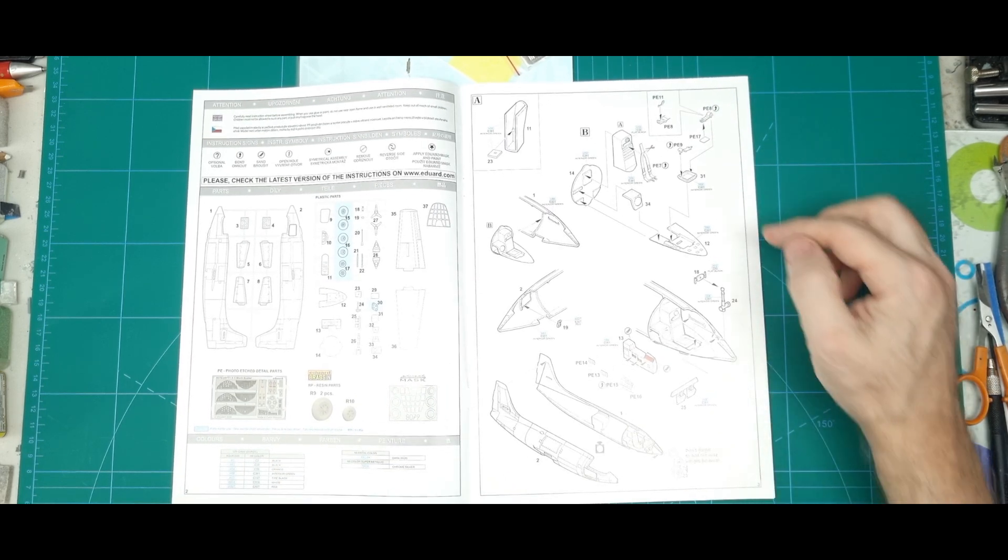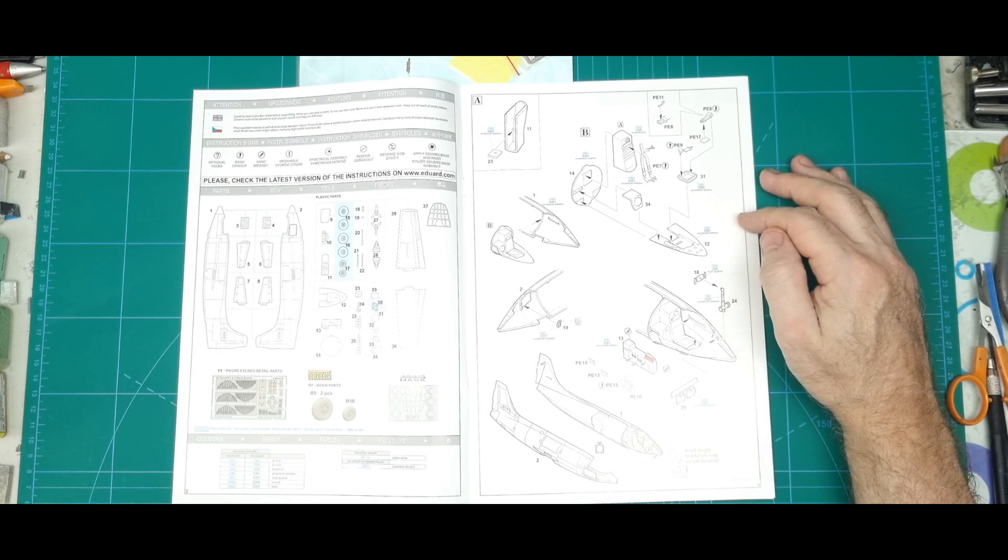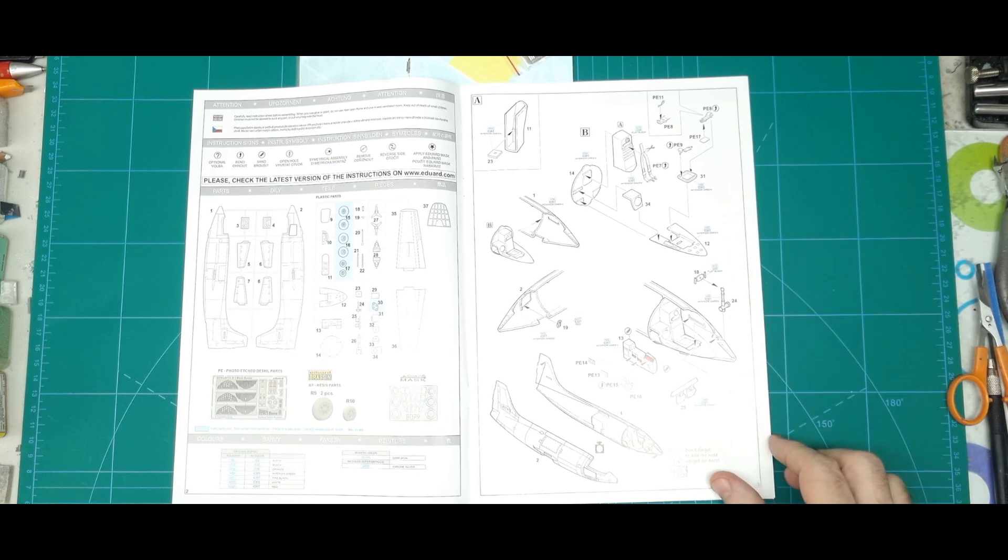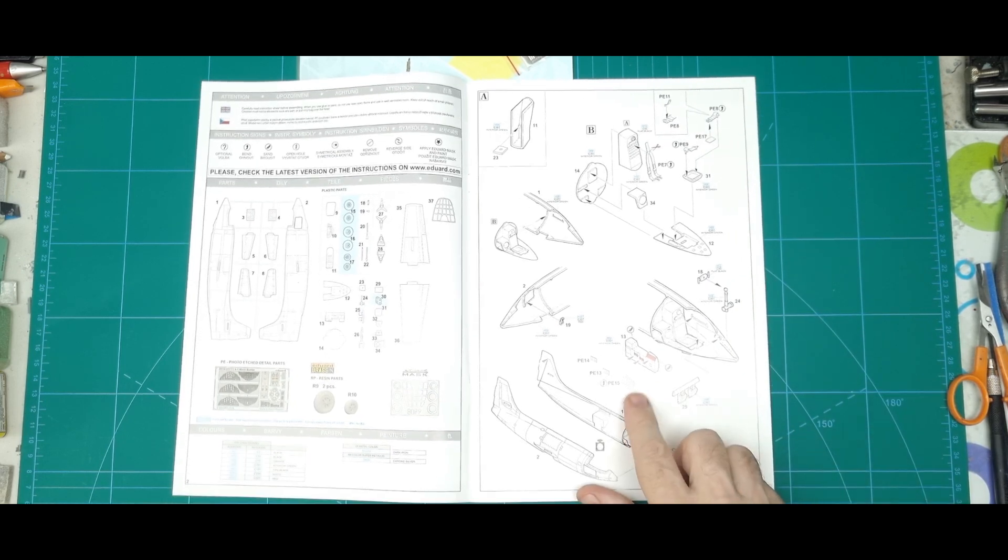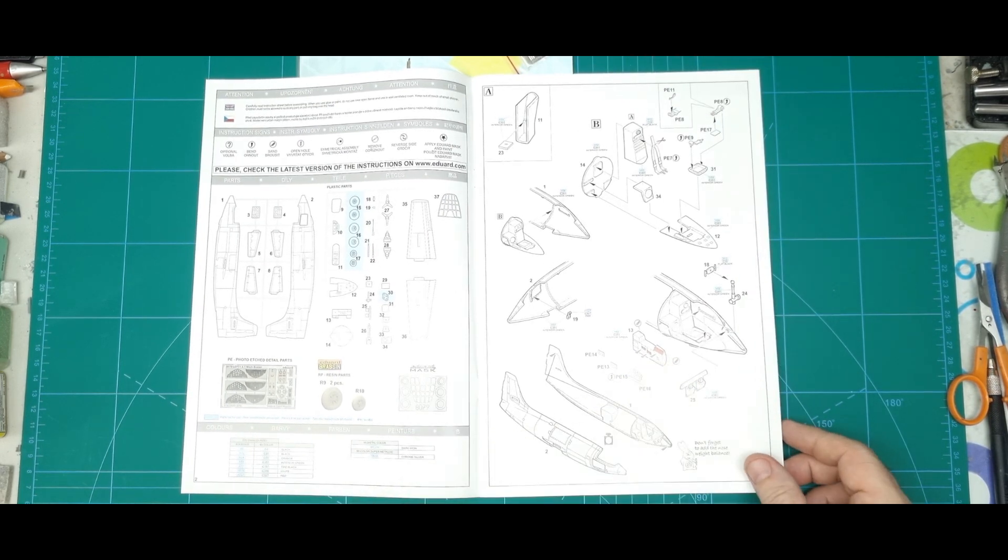Alright, so starting in the cockpit. So a bit of that photo etch going to use in there. The usual removing plastic parts to replace with the photo etch, so they highlight that with the red.